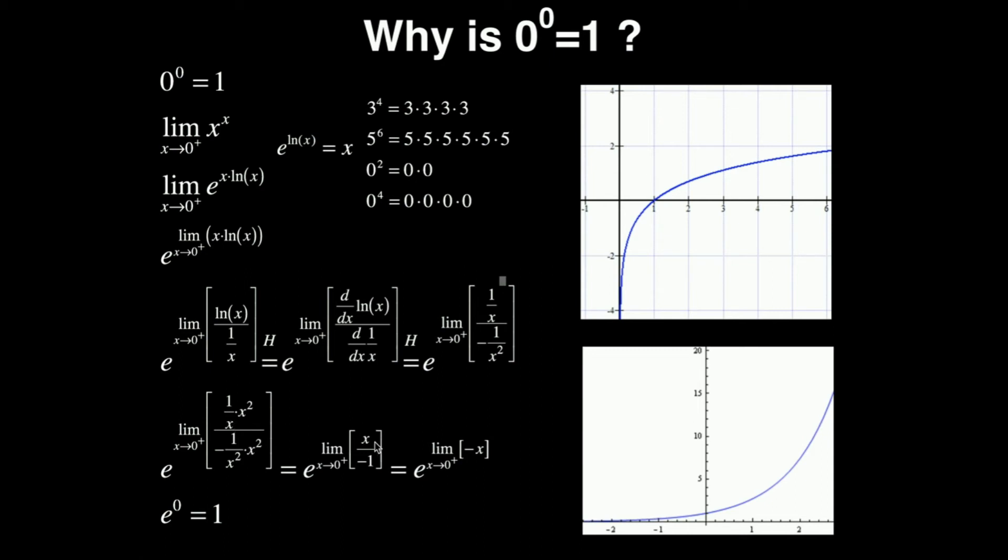And now I can simplify this, just pull the negative sign up here. I have e, and it's to the limit as x goes to 0 from the positive side of negative x. And now I can simply just plug in 0 for here. The limit would just be 0, because if I plug in 0 here, it would just be the limit of 0. So all I have is e to the 0. e to the 0 is 1. And that is the proof that 0 to the 0 power is 1.